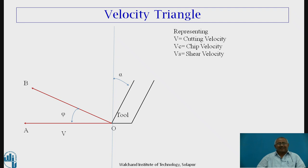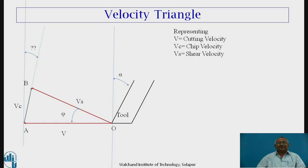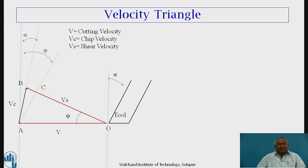OB represents the correct magnitude of shear velocity. We draw the line at angle phi, then draw a line from A cutting line OB, parallel to the tool face, giving triangle OAB. This AB line makes an angle equal to alpha — that is the rake angle — with the vertical. AB represents Vc, and if you measure the magnitude of line AB it gives chip velocity; if you measure magnitude of OB it gives shear velocity.